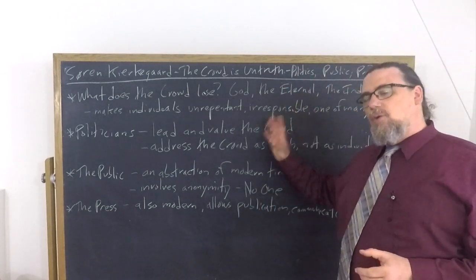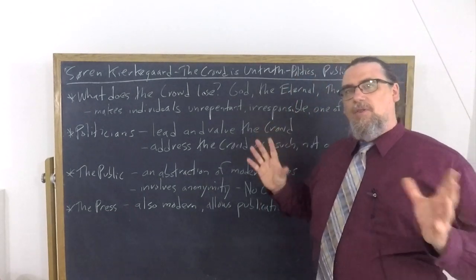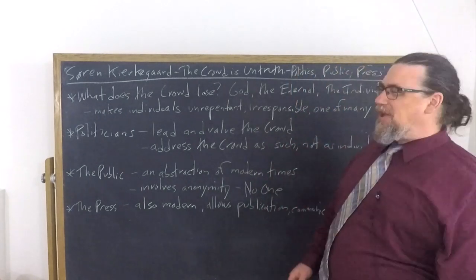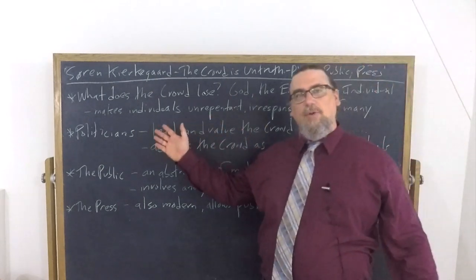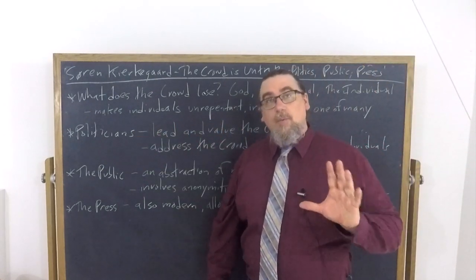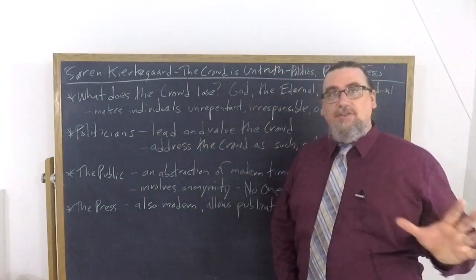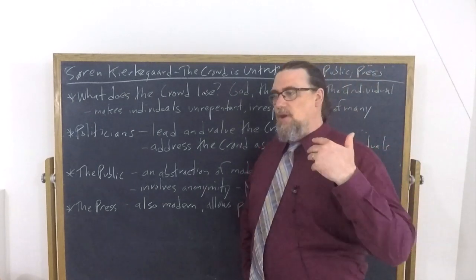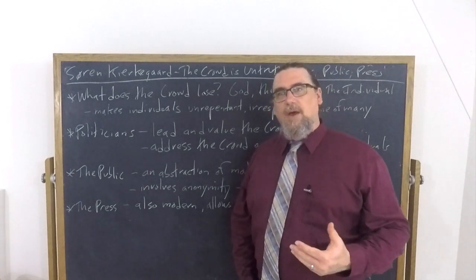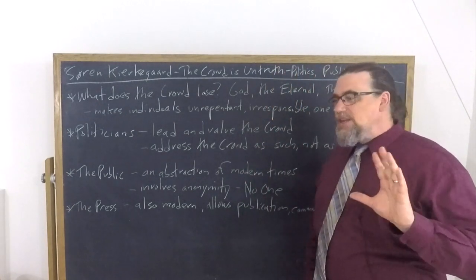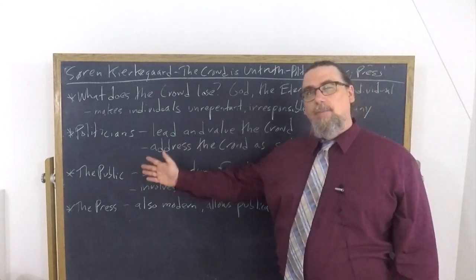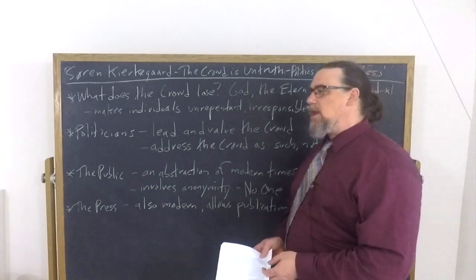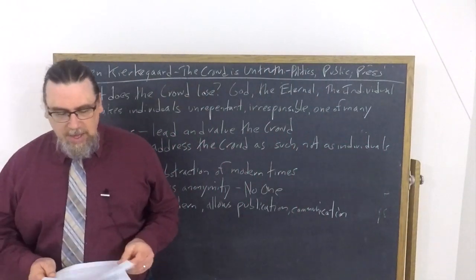So he associates this notion of the crowd with three main things, and they all start with P in the English language: politics or politicians. Now we have to point out that Kierkegaard does see a legitimate domain in which politicians can operate and decisions can be made about those sorts of things quite legitimately. And then there's what he calls the public and the press.